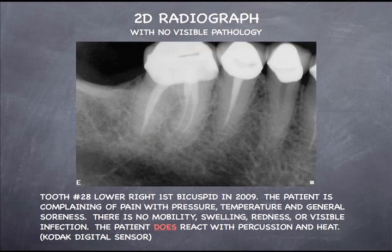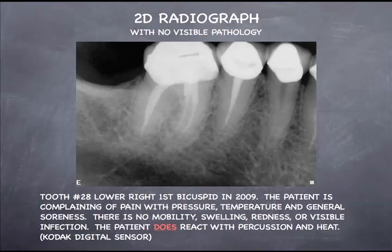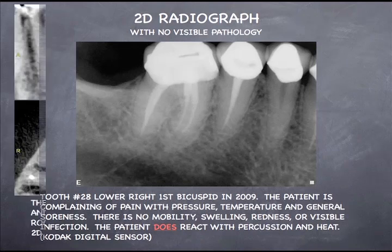We'll begin with a 2D x-ray — really no visible pathology on tooth number 28. You can see numbers 29, 30, as well as 27 all have endo. So the patient does have a history of endo issues and chronic pain in these teeth. This digital radiograph — a Kodak digital sensor — doesn't really show any pathology. The tooth is just very sensitive to pressure, temperature, and general soreness. With percussion and heat, the patient does react, so an endodontic procedure was initiated.